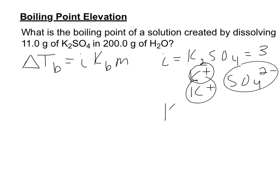K sub B relies on my solvent. The K sub B in this case relies on water, H2O, and it's a constant, which is 0.51 degrees Celsius per molal.